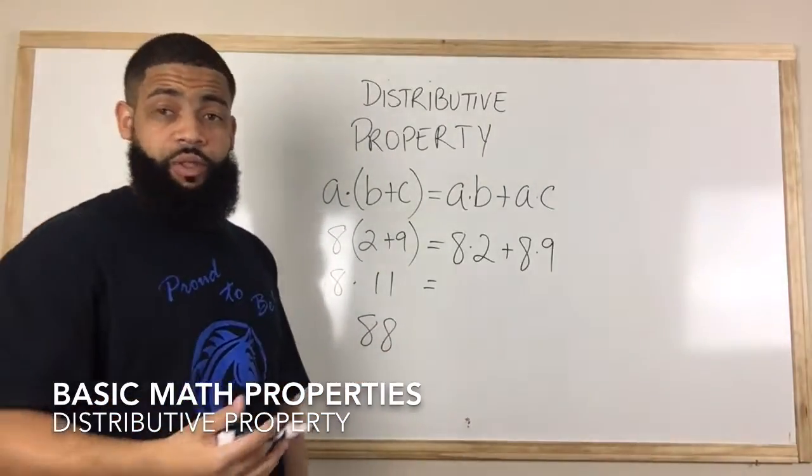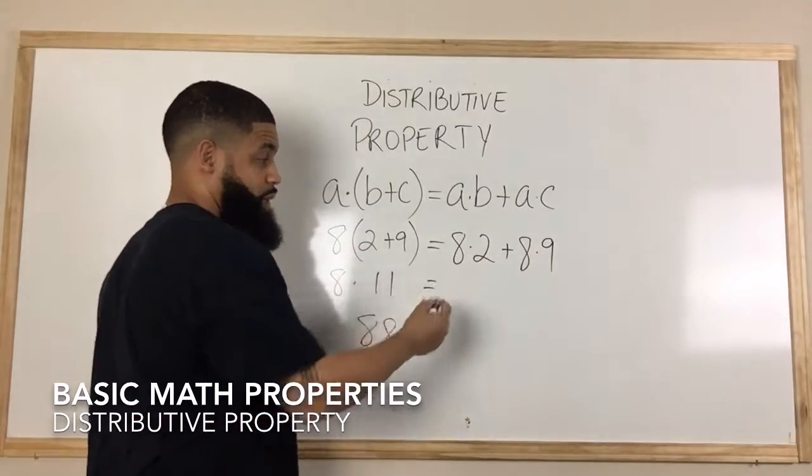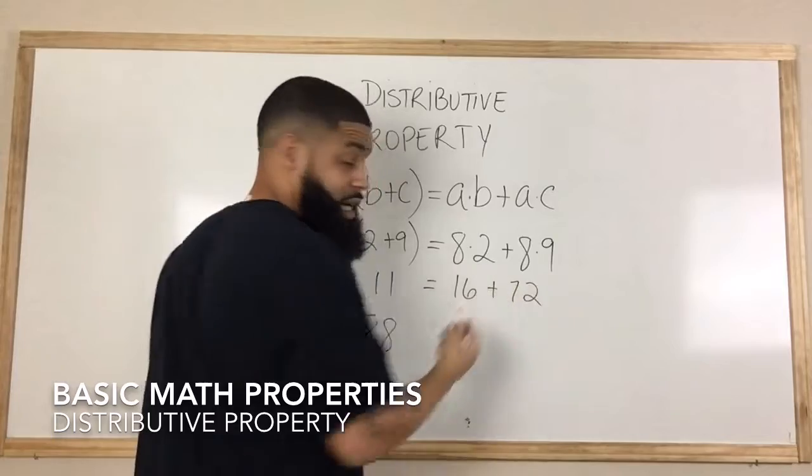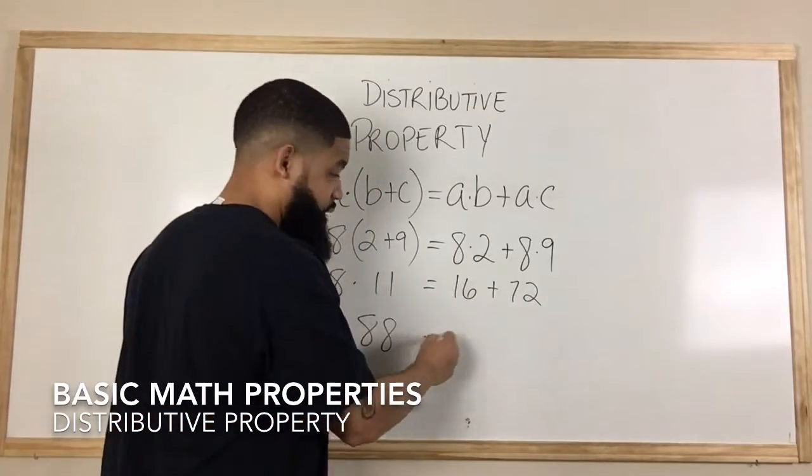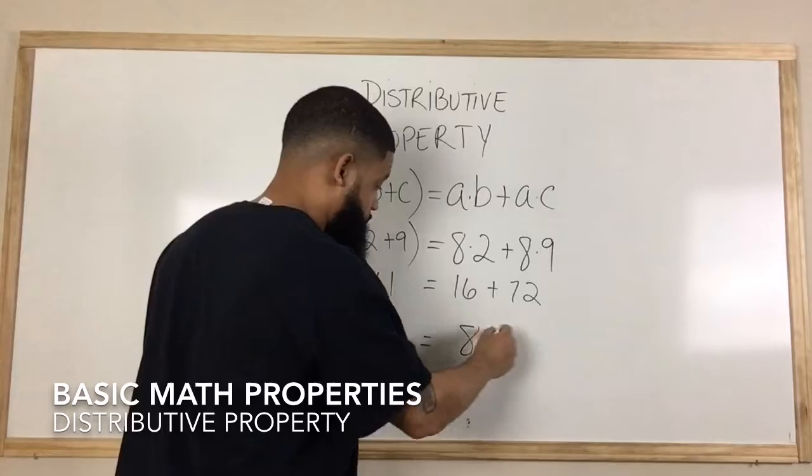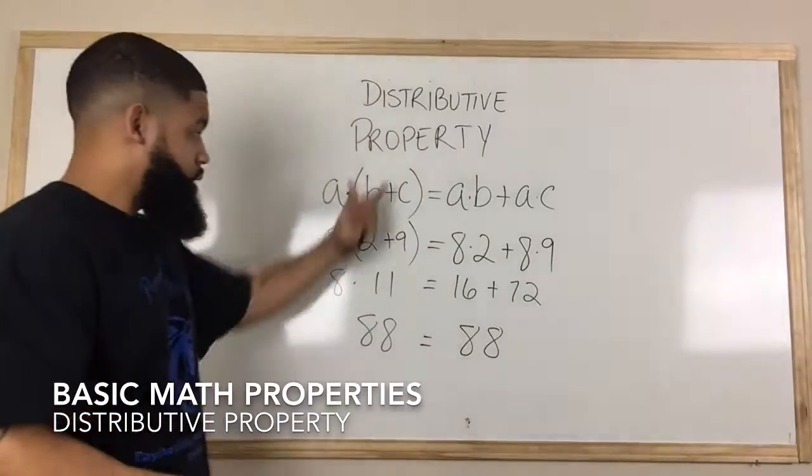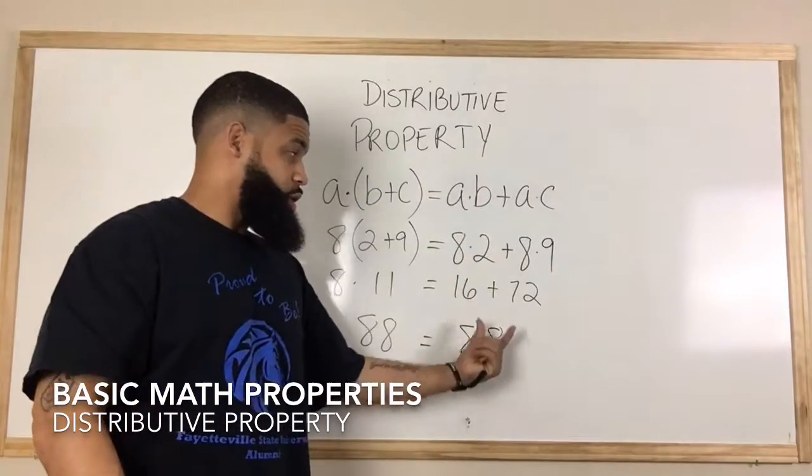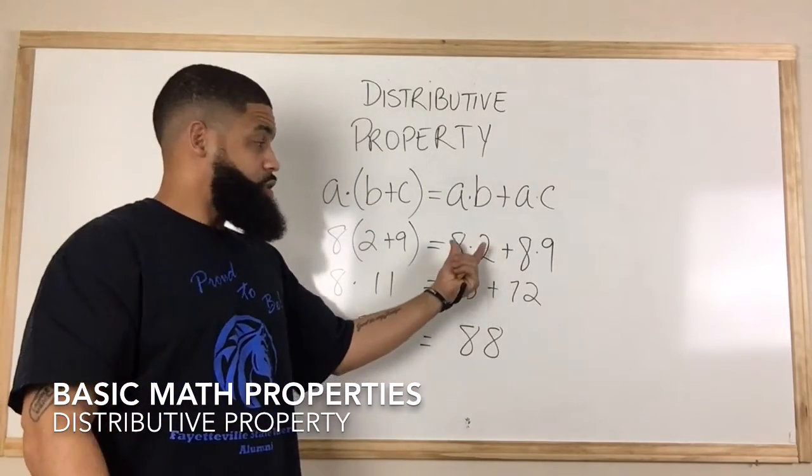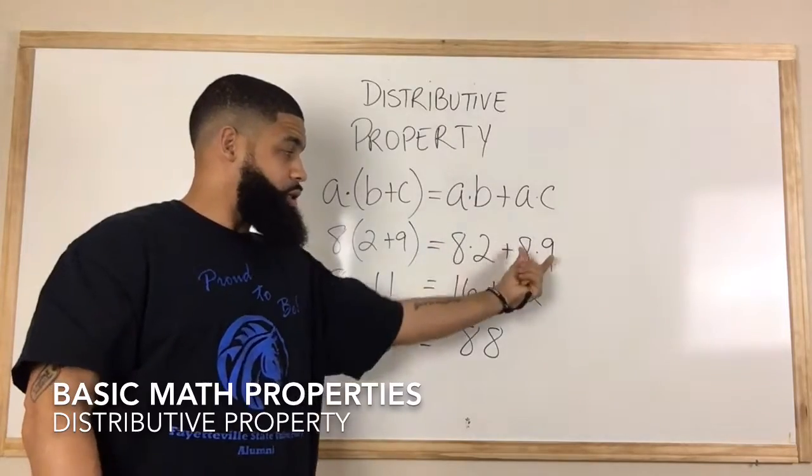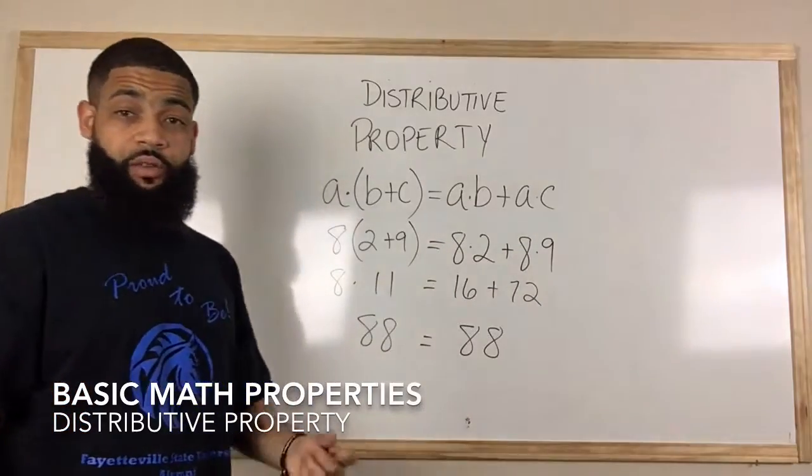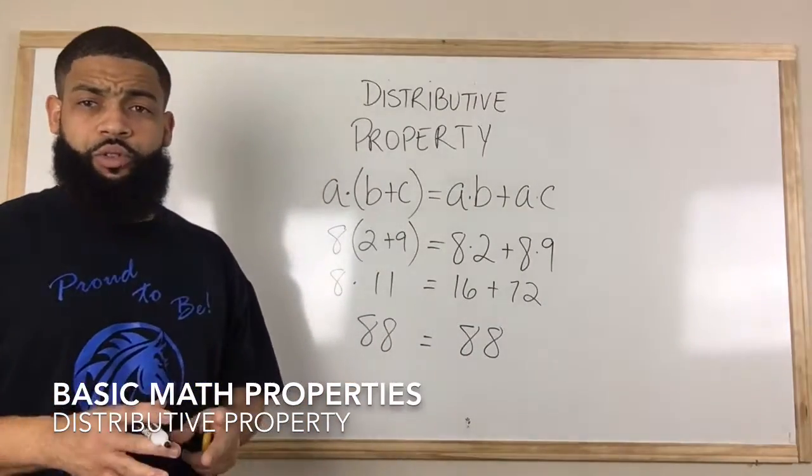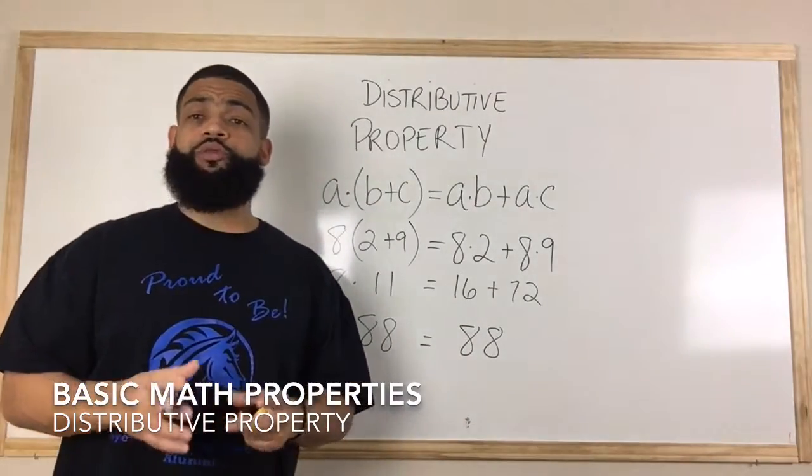That gives me 88. Now using the distributive property, we would first multiply 8 times 2, which gives us 16, plus 8 times 9 is 72. If we add 16 and 72, we'll get 88. Notice both ways we get 88. That's using addition. Let's try an example where we use subtraction.